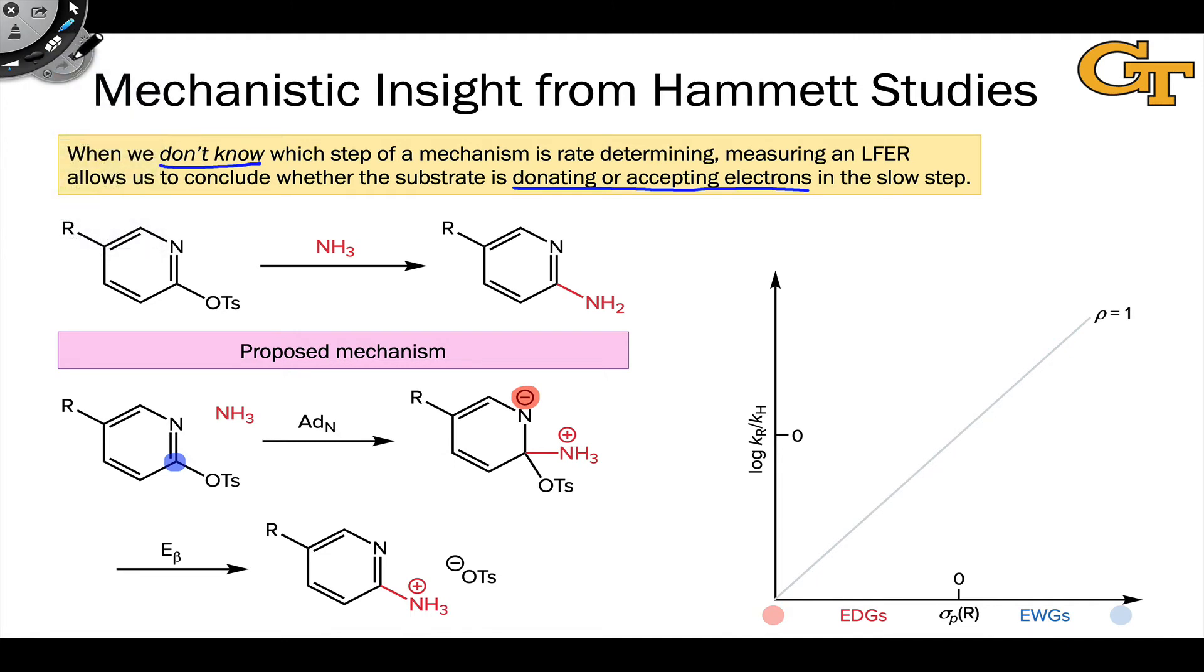We can orient ourselves by saying, when R is H, I'm going to position myself right at the center of the Hammett plot. What are the two possible outcomes in terms of which step is rate determining?